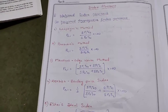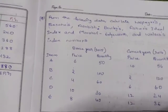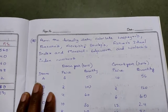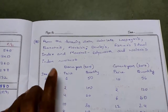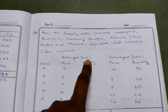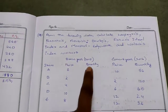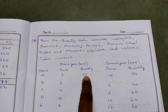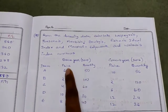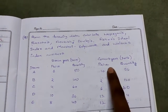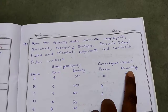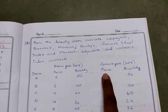Based on these formulas, today we are going to solve one problem. From the following data, calculate Laspeyre's, Paasche's, Dorbish-Bowley, Fisher's Ideal Index, Marshall-Edgeworth, and Walsh index numbers. The base year is 2015 with price P0 and quantity Q0 given. Current year is 2016 with price P1 and quantity Q1 given. Note: if expenditure is given instead of quantity, it must be converted into quantity. Here both price and quantity are given for both years.